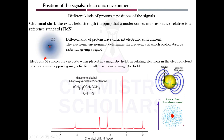Electrons surrounding the nucleus circulate when placed in a magnetic field, and these circulating electrons create a small magnetic field around the nucleus. This magnetic field created by the electrons is called the induced magnetic field. So every nucleus creates an induced magnetic field because of the surrounding electron cloud.